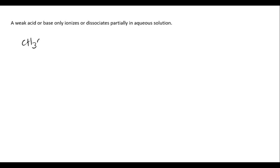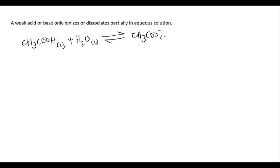Let's have a look at acetic acid as an example. Acetic acid has the formula CH₃COOH and is an example of a weak acid. When it dissociates in water (liquid), we get the acetate ion CH₃COO⁻ (aqueous) and H₃O⁺ ions being formed.